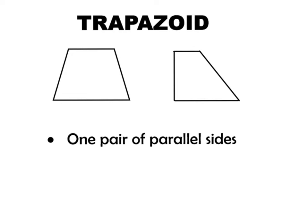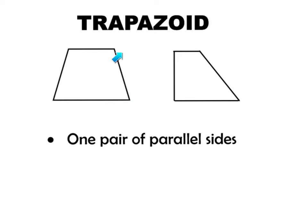In your notes, write down the word trapezoid and draw a picture of the two different types of trapezoids shown here. What classifies a trapezoid is that it has one pair of parallel sides — write that down. Look at this first example: it has four line segments, making it a quadrilateral, but it's a trapezoid because the top line segment is parallel to the bottom line segment, while the two side segments are not parallel — if they kept going, they would eventually intersect.